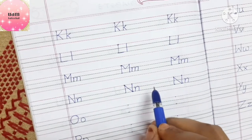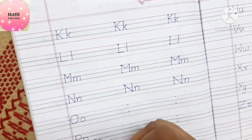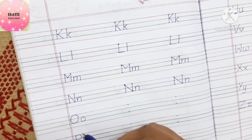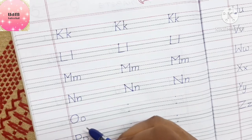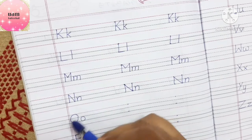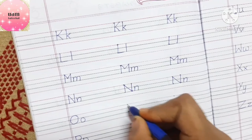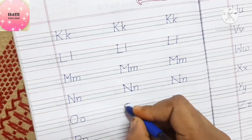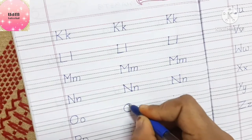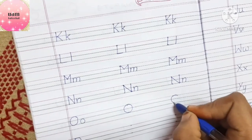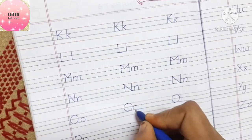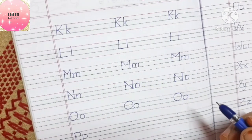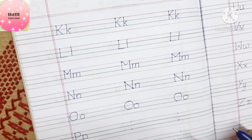Words starting with N: nose, nest. Now the letter O. It's easy — just write a circle! Capital O is a circle from the first line to the third line, and small o is a circle between the second and the third line. Words starting with O: orange, onion.